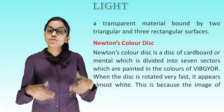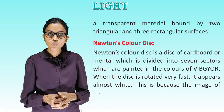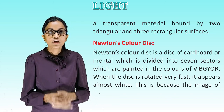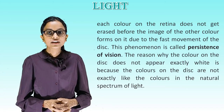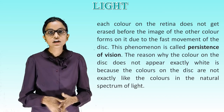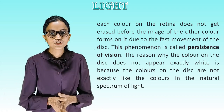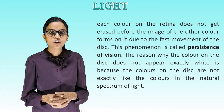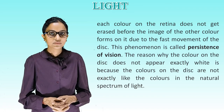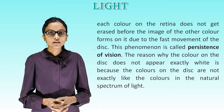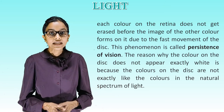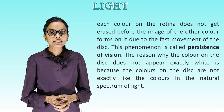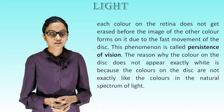When the disc is rotated very fast, it appears almost white. This is because the image of each color on the retina does not get erased before the image of the next color forms on it, due to the fast movement of the disc. This phenomenon is called persistence of vision. The reason the colors on the disc do not appear exactly white is because they are not exactly like the colors in the natural spectrum of light.